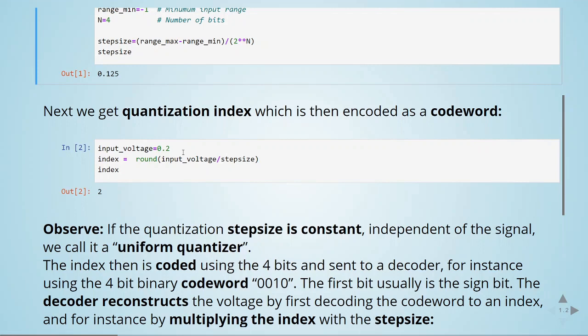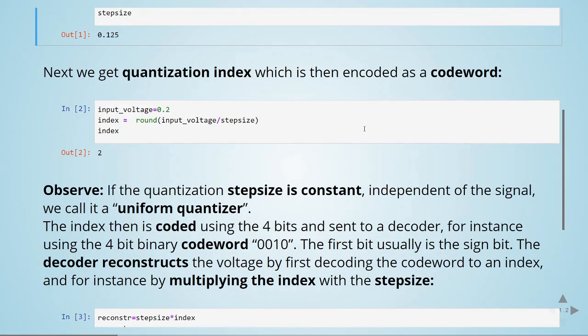For example, we can code this index 2 using 4-bit binary code word 0010. The decoder will reconstruct the voltage by first decoding the code word to an index. So it will decode from 0010 to the index 2.